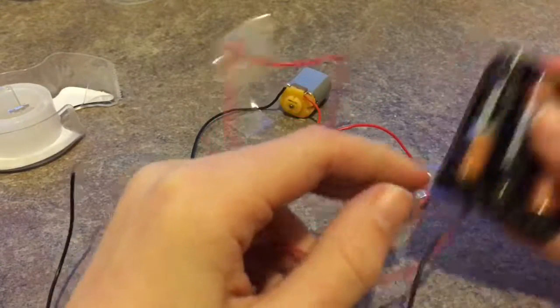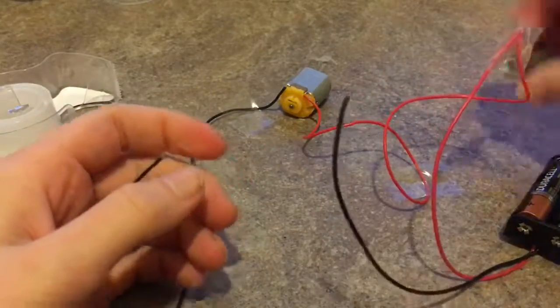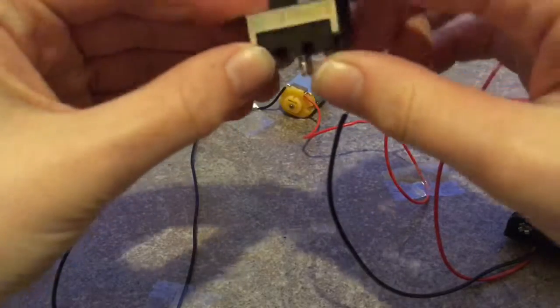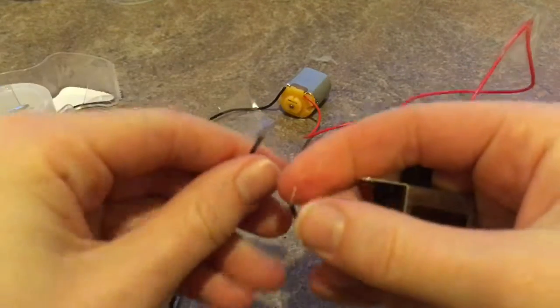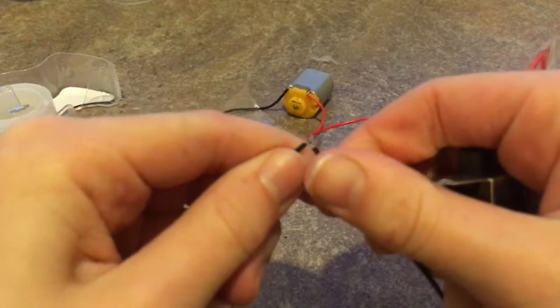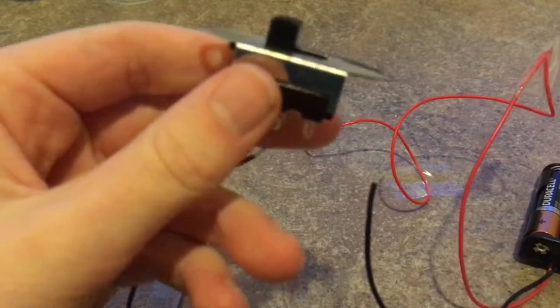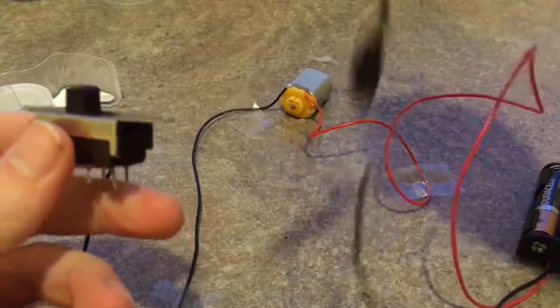Anyway, so to wire up this switch in here, it's really simple. Instead of just putting a straight circuit in here, you just put that right there. You don't really need these extra wires.